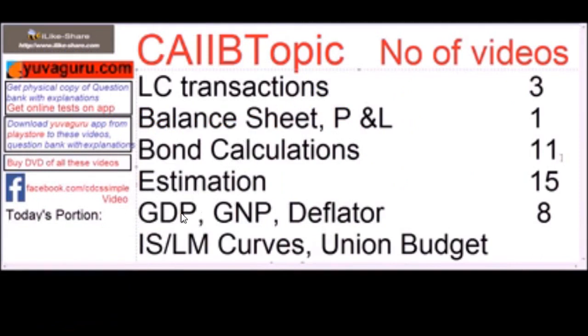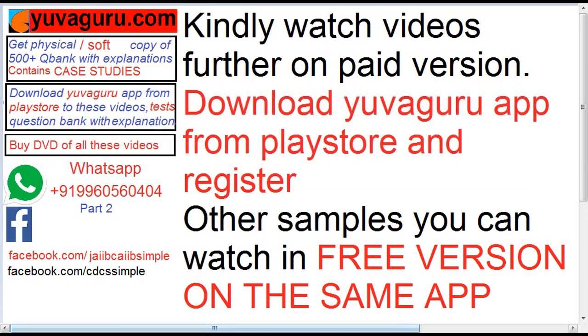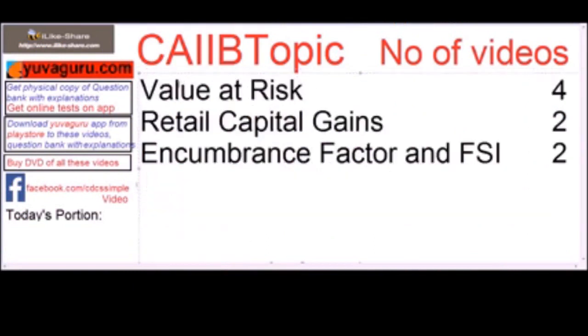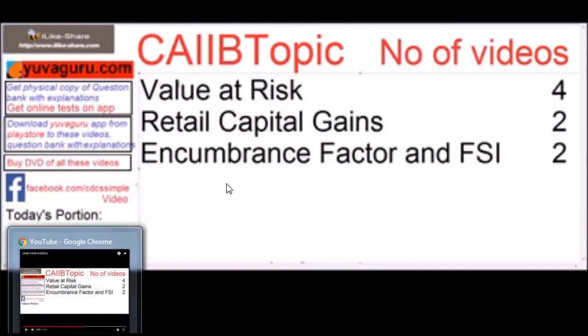Bond calculations, estimation, GDP, GNP deflator, ISLM curves, union budget, Keynes theory, ratio analysis, import export, pre and post shipment, tier 1 and tier 2 capital, CRAR, Basel II, horizontal and vertical disallowances, value at risk, retail capital gains, income rents.